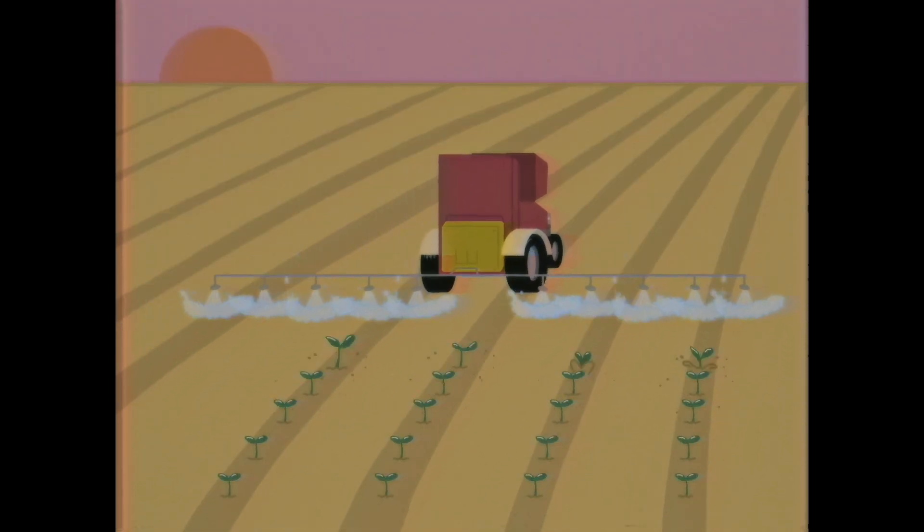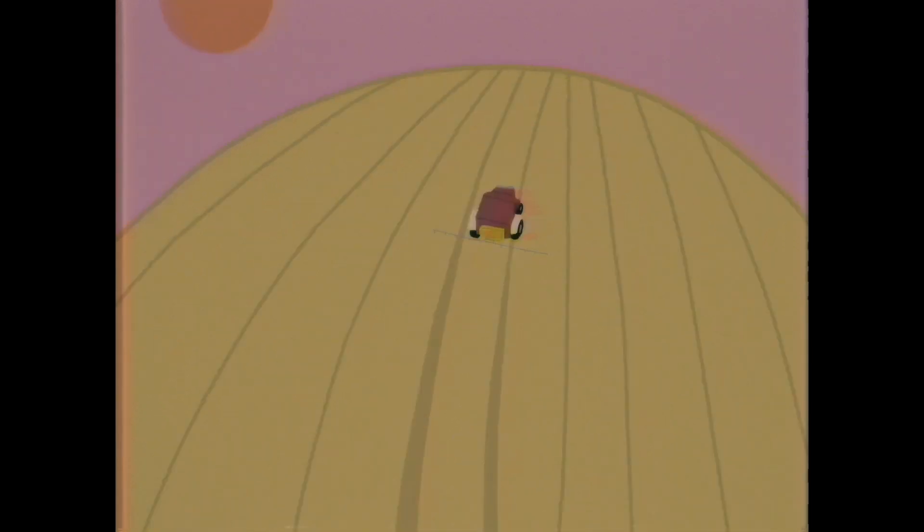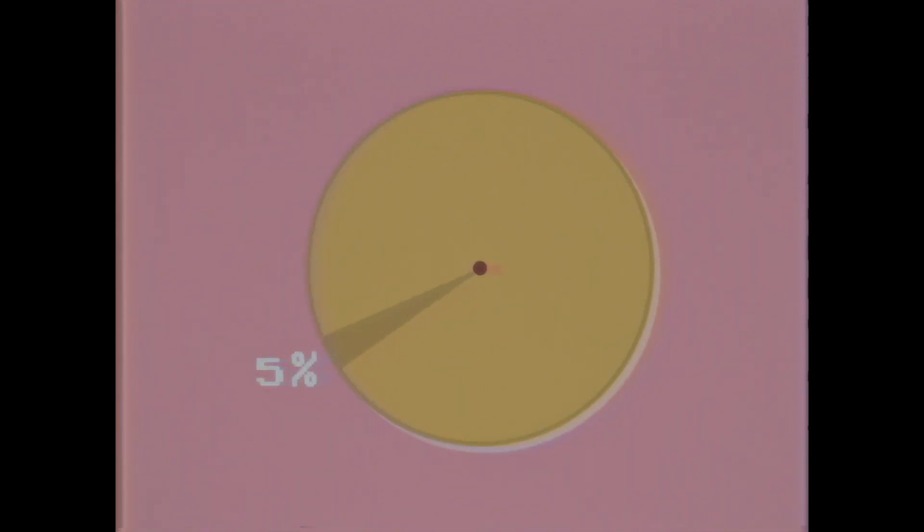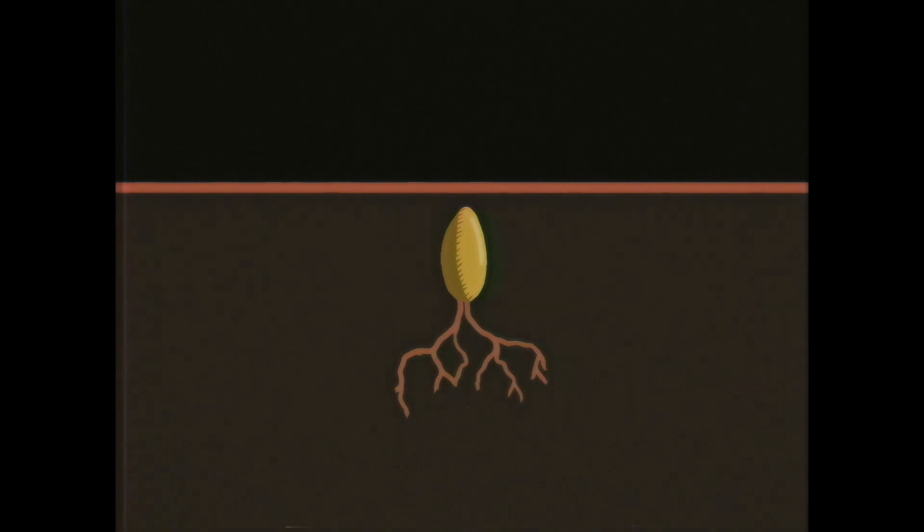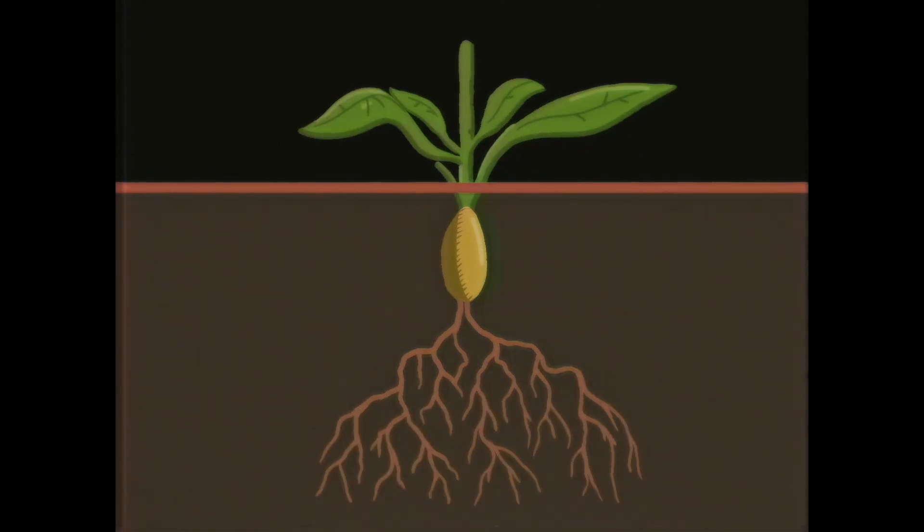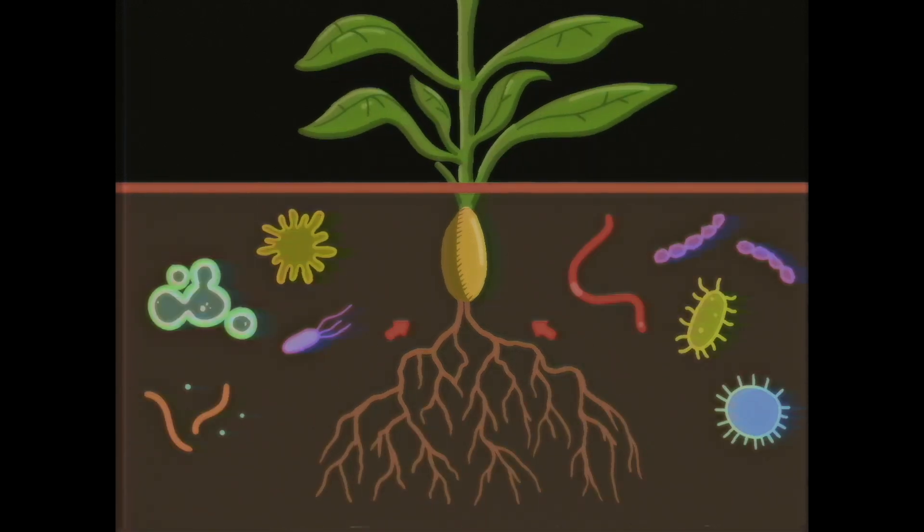Fertilizer is essential for feeding a growing planet, but also causes 5% of all global greenhouse emissions. Our agricultural partners have reprogrammed soil microbes to symbiotically transfer nitrogen to plants' roots with zero emissions.